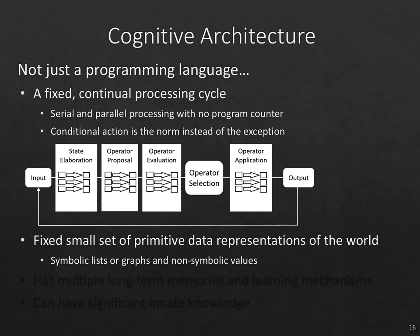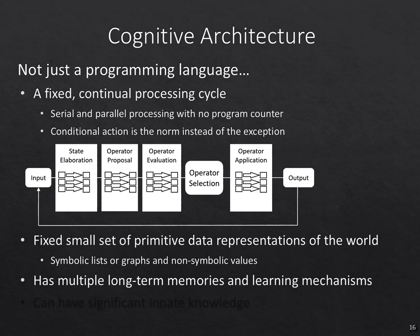These systems also often have a fixed small set of primitive data representations used to represent a model of the world — often symbolic lists or graphs with non-symbolic values. It's not like standard programming languages where you have arrays, record structures, trees, and all sorts of things. Usually we start with very general, simple data structures such as graph structures and build the kinds of knowledge structures we need out of those. And as I've mentioned, these systems have multiple long-term memories and learning mechanisms that are automatically saving away knowledge over time.